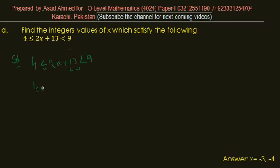subtract 13 from all sides. So 4 - 13, 2x + 13 - 13, and 9 - 13. In order to remove 13, we minus 13 from all sides, so it becomes minus...